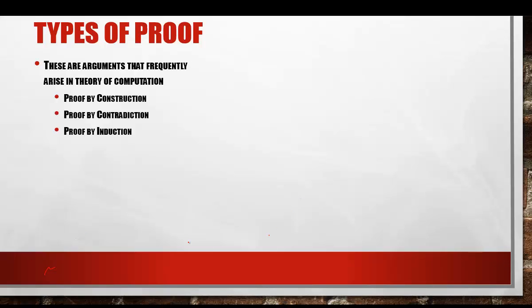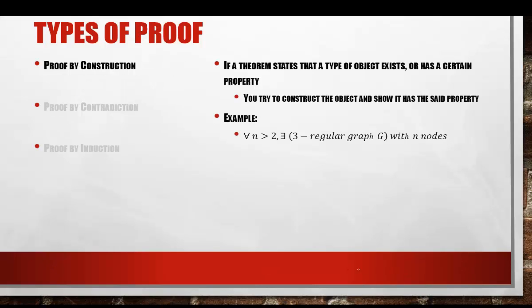The first kind of proof we generally encounter in the theory of computation are problems that state that a particular kind of object exists, or that a particular kind of object has a certain property. One way to prove such theorems is by demonstrating how to construct the objects that the theorem talks about. As you build these objects, you effectively demonstrate that the object exists, so therefore that statement must be true. This technique is called proof by construction.